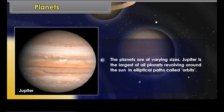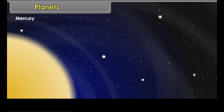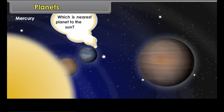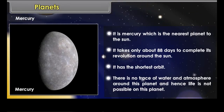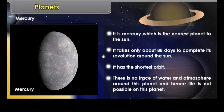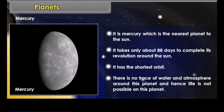Jupiter is the largest of all planets. The planets revolve around the sun in elliptical paths called orbits. Mercury is the nearest planet to the sun. It takes only about 88 days to complete its revolution around the sun and has the shortest orbit. There is no trace of water and atmosphere around this planet, and hence life is not possible on Mercury.